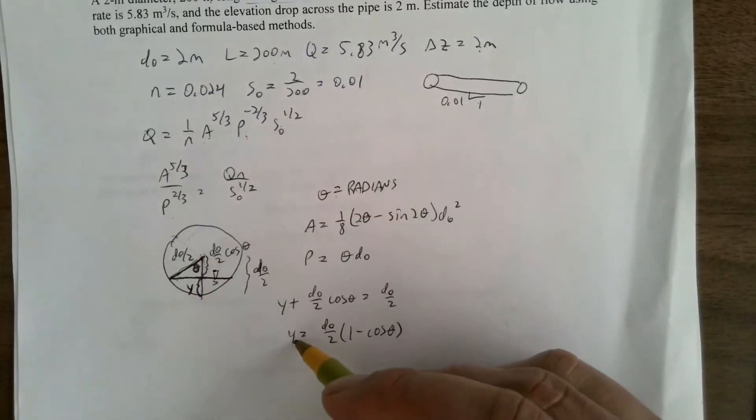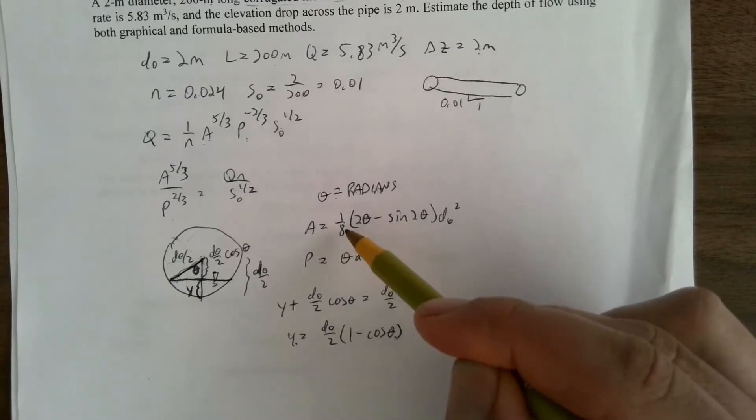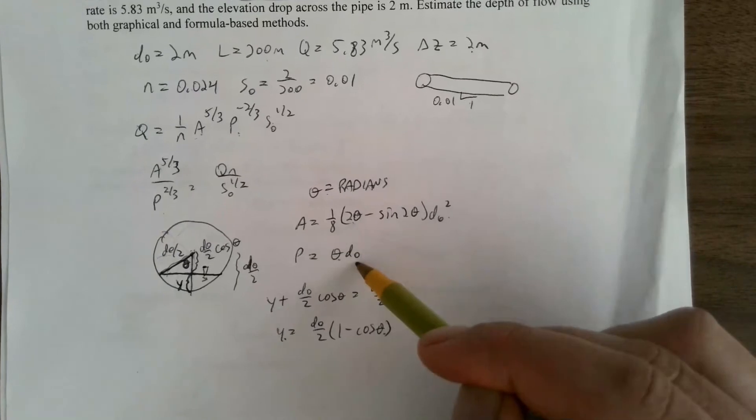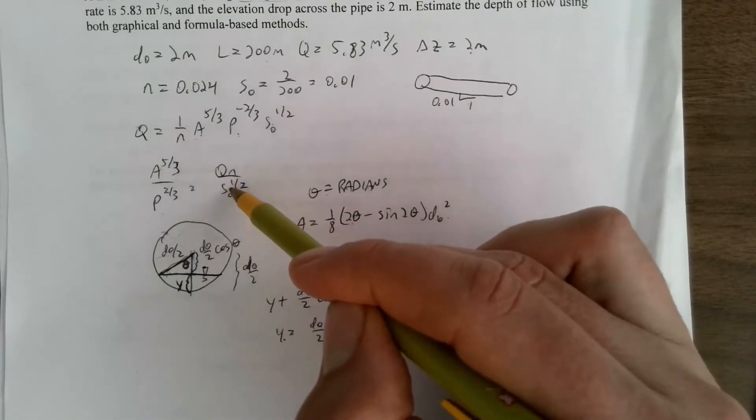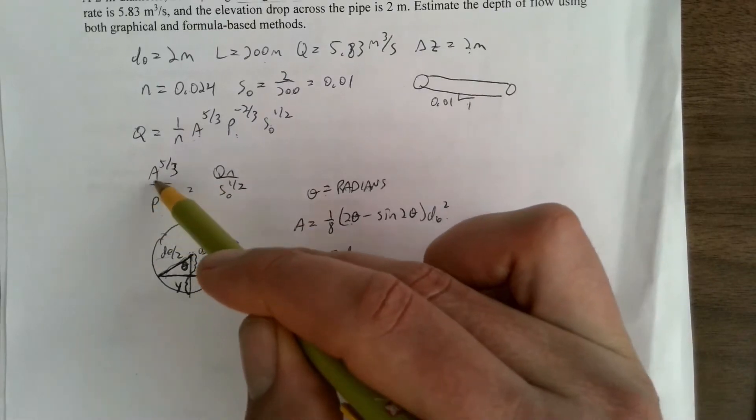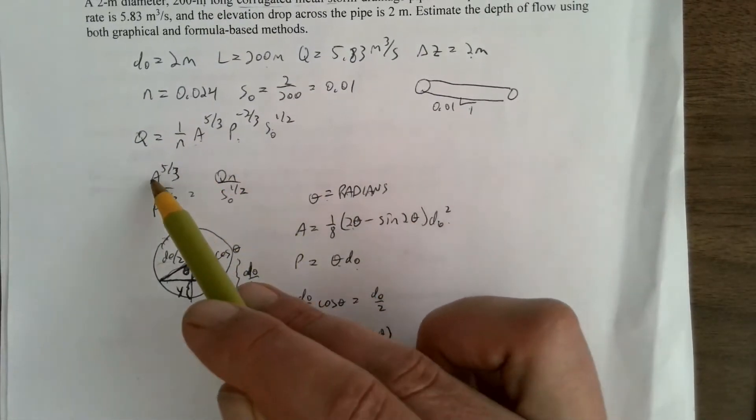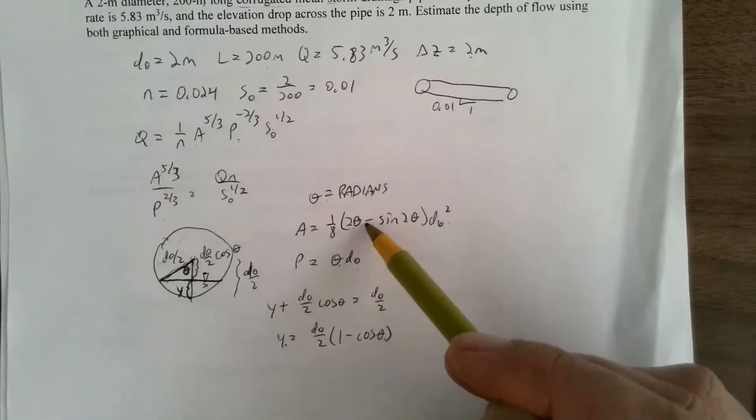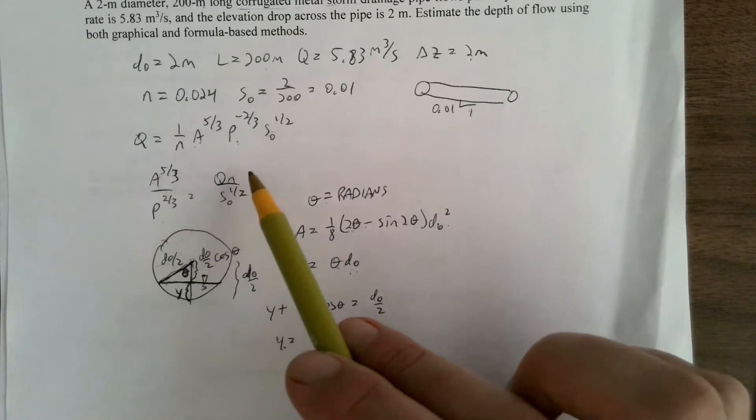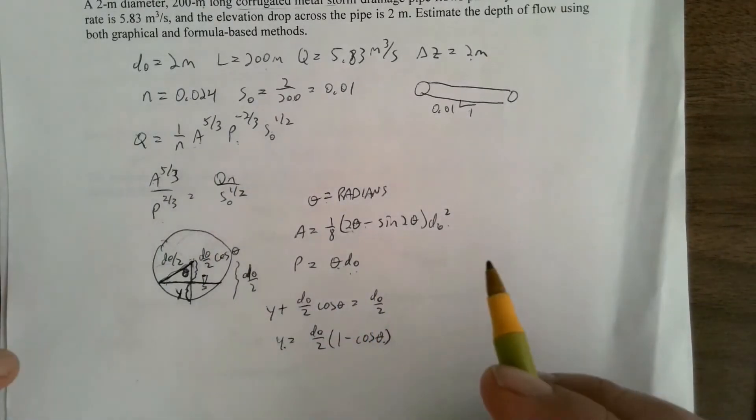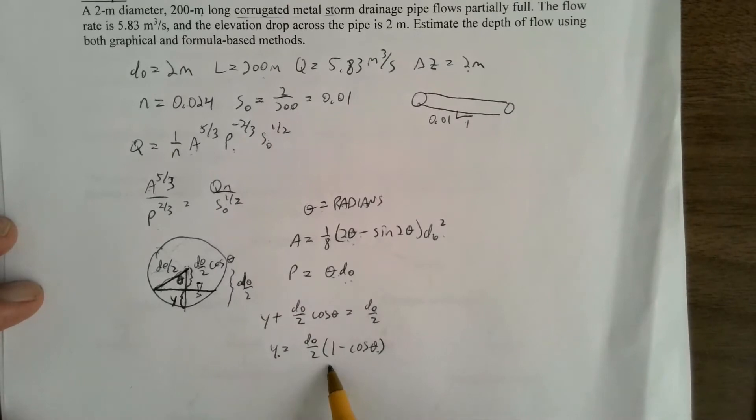So I can get the depth once I know the angle. I have equations here for area in terms of angle and D0, which I know. And then I have Manning's equation here with Q and S naught, which I know, area and the perimeter. So if I substitute my values in here, this is a constant area and perimeter, I can write in my values here with theta and D0. And then I'm left with one equation for theta. Once I've got theta, then I can solve for Y. That's the strategy here for how you could solve this problem.